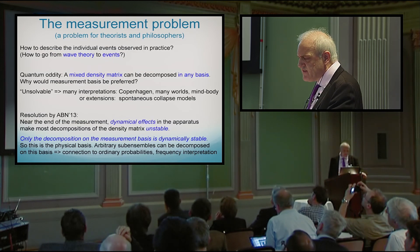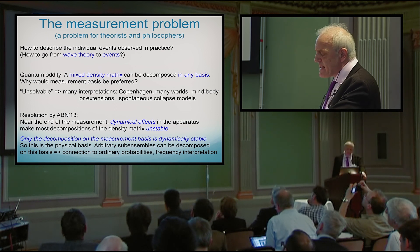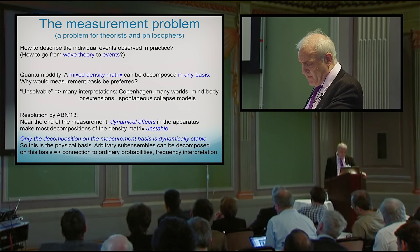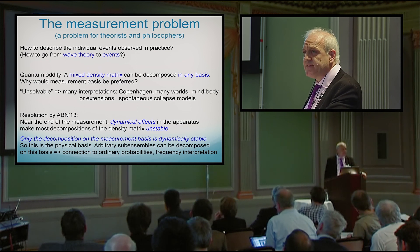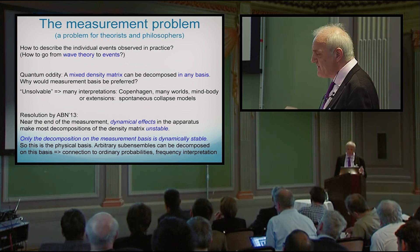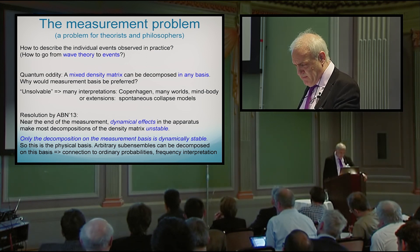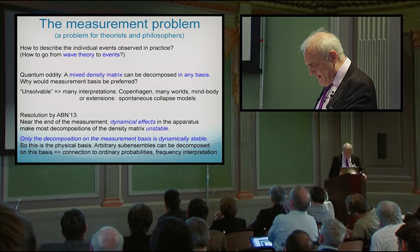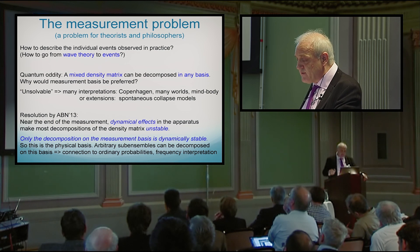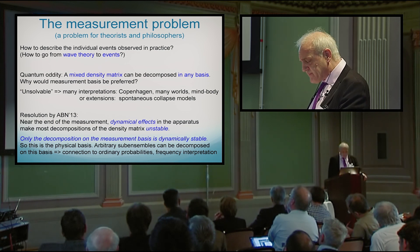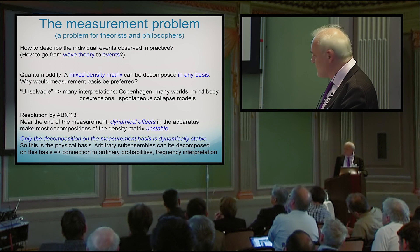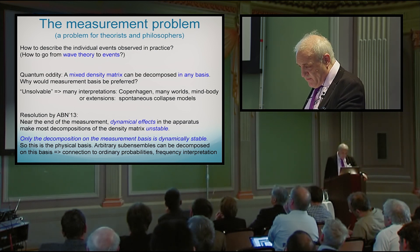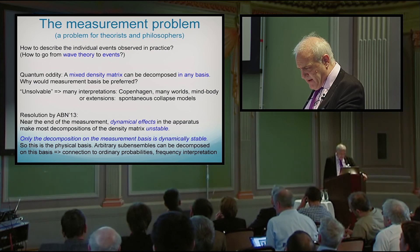Now comes another issue, which is called the measurement problem. It is a problem for theorists and philosophers — it is not at all a problem for experimentalists, although they have lots of problems doing measurements, but this is not one of them. They just do the right thing and for the right reason, whether or not they know why, but they have long figured out that what they do is exactly what works. And after the long story summarized on this page, the result is that they are doing the right thing in any case.